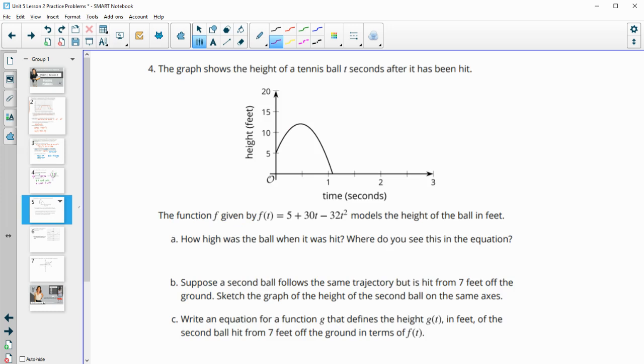Then number 4. The graph shows the height of a tennis ball after t seconds after it's been hit. So here's that function, models this ball. So how high was the ball when it was hit? So right away when it was hit, so it's traveled for 0 seconds, that's the y-intercept. So it was 5 feet when it was hit.